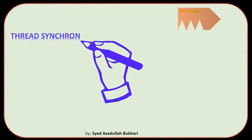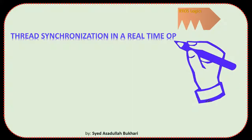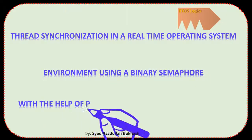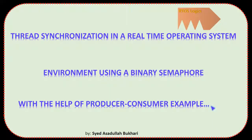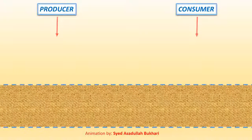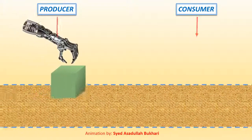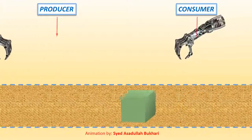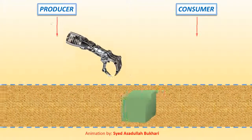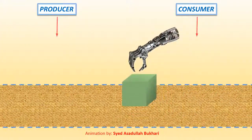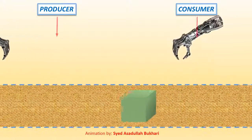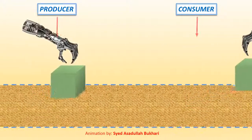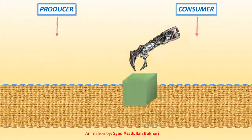Hi, welcome to my real-time operating system concept videos. In this video I have tried to simplify and demonstrate inter-thread synchronization mechanism in an embedded system with the help of a producer-consumer example, to understand how to synchronize between two threads properly using a binary semaphore. One thread is controlling one robotic hand and a second thread is controlling another robotic hand. The entire process should be so synchronized that only after a producer thread produces, the consumer thread should start consuming, and this should happen continuously any number of times.